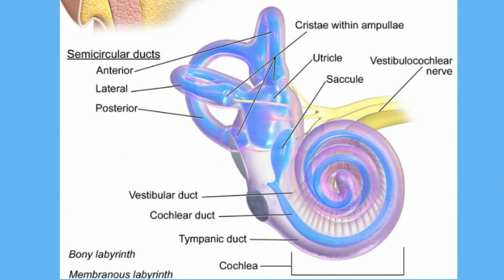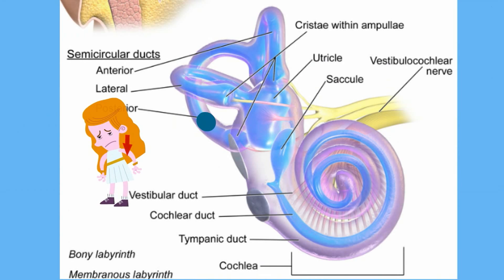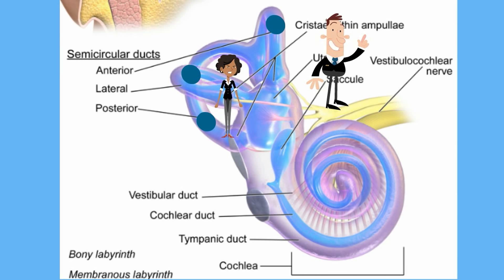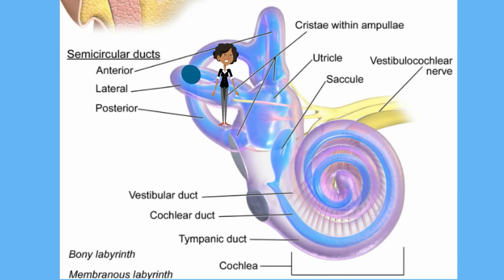The posterior semicircular canal measures when your head tilts from your ear towards your shoulder. The anterior part controls up and down movement, like you are saying yes. The lateral canal controls the side-to-side movement. With these three different semicircular canals, nerve impulses are sent to your brain.